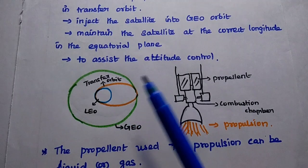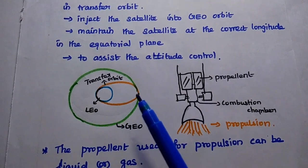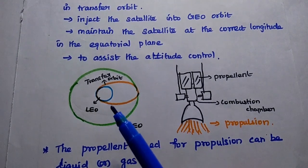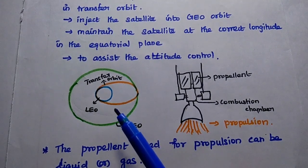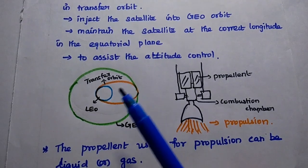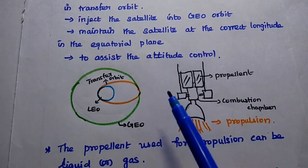The propulsion subsystem is mainly used to provide the proper orientation and spin rate of the satellite in this transfer orbit to inject it into the geostationary orbit.